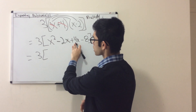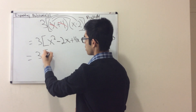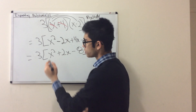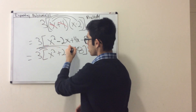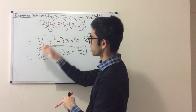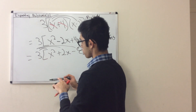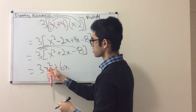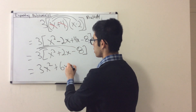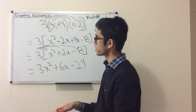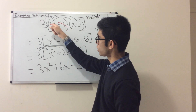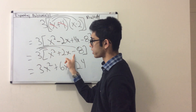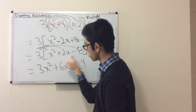Now I collect like terms inside: negative 2x plus 4x gives 2x, so I have x squared plus 2x minus 8. Now to deal with the 3 out front — all you do is multiply 3 by everything inside. 3 times x squared is 3x squared; 3 times 2x is 6x; 3 times negative 8 is negative 24. So the final answer is 3x squared plus 6x minus 24. Deal with your expressions first, collect like terms, then bring in the outside number — simple.